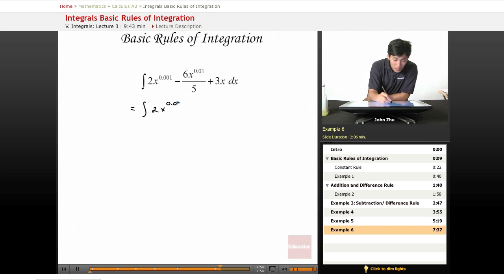2 times x to the 0.001 dx minus, now we can write this as 6 over 5 times x to the 0.01 dx plus 3x dx.